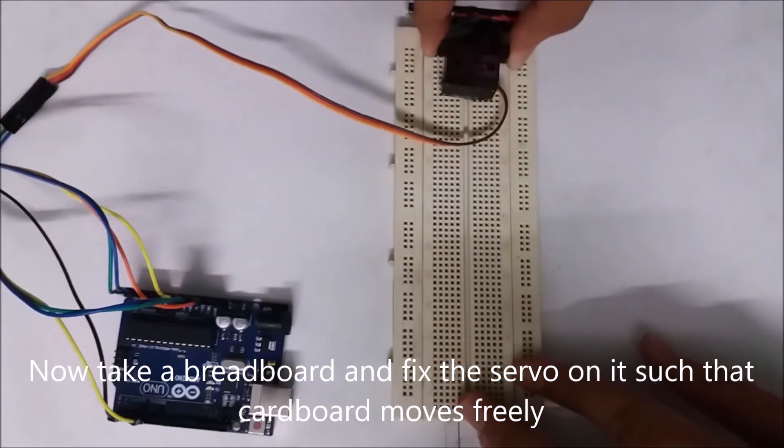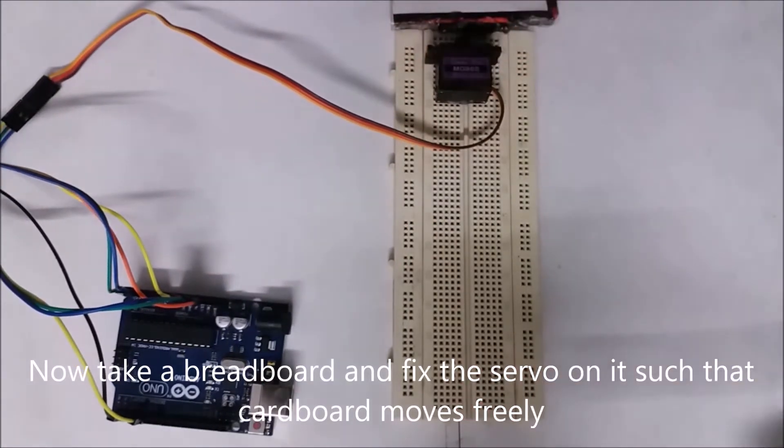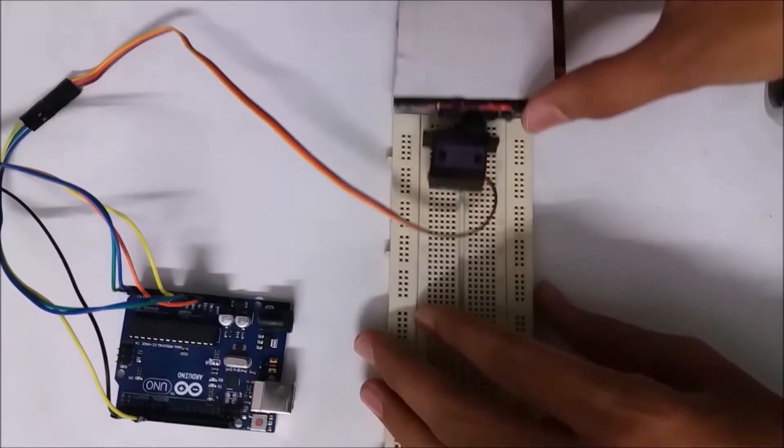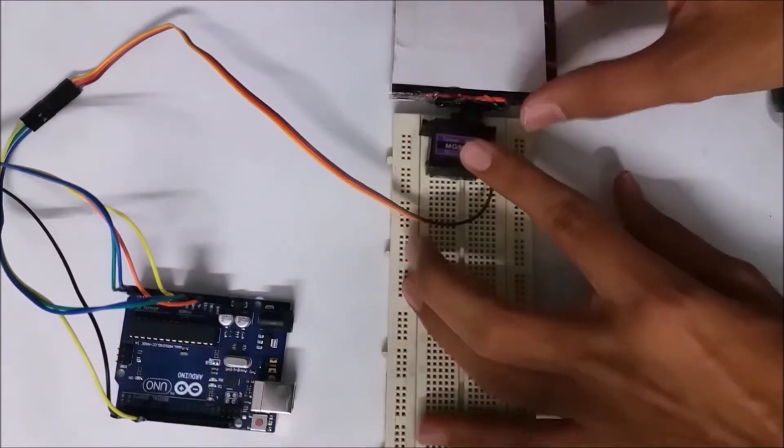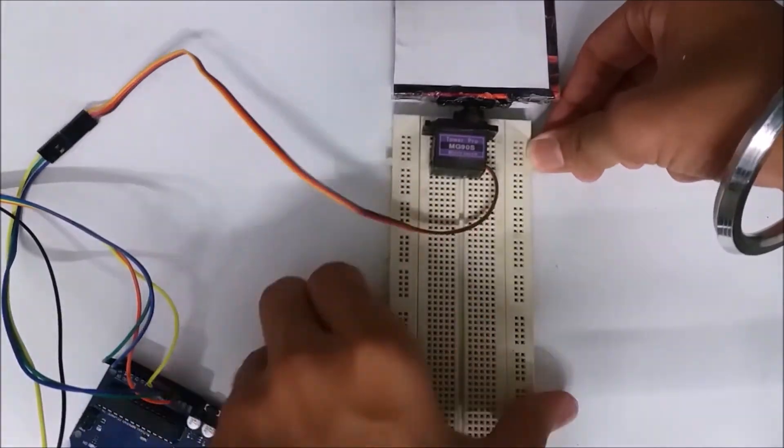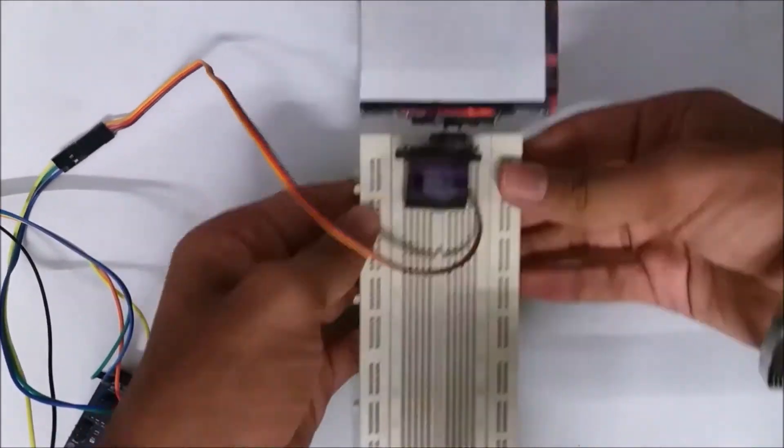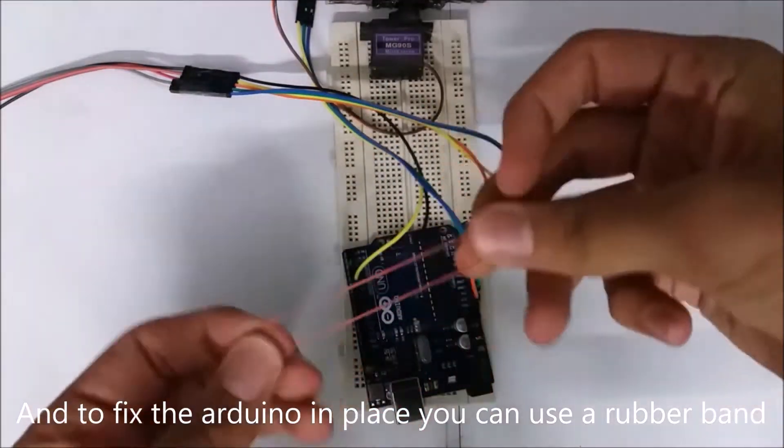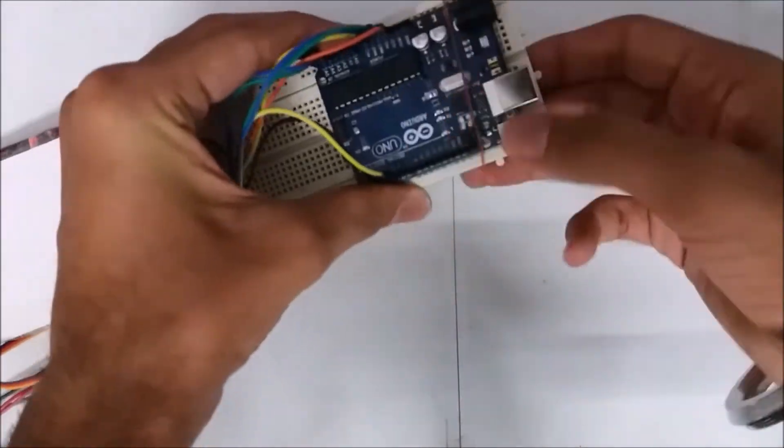Now take a breadboard and fix the servo on it such that the cardboard moves freely. And to fix the Arduino in place you can use a rubber band.